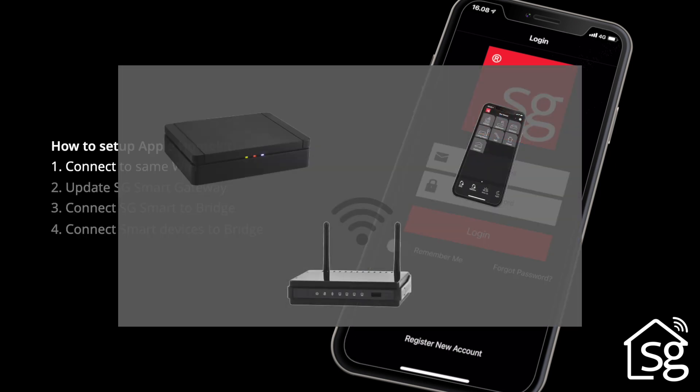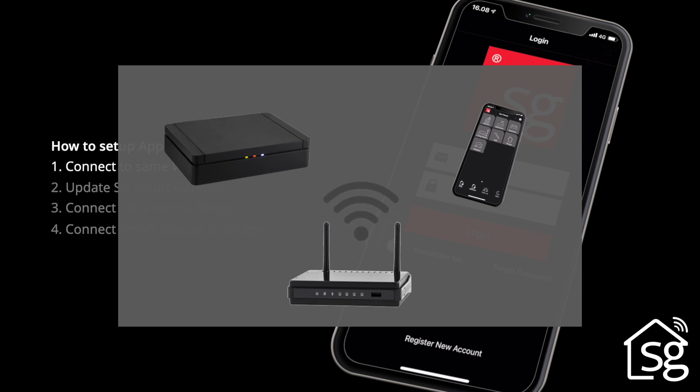First, you have to make sure your mobile phone or tablet is connected to the same Wi-Fi network as the Smart Gateway. Make sure to use the mobile phone or tablet that is used with the HomeKit app and account.